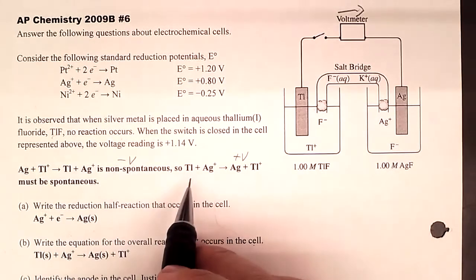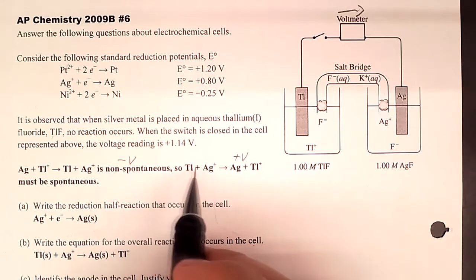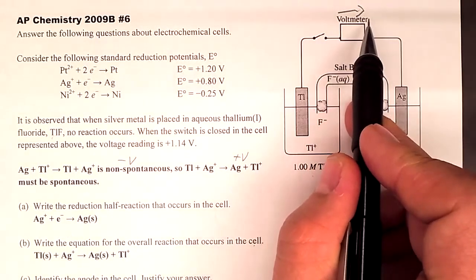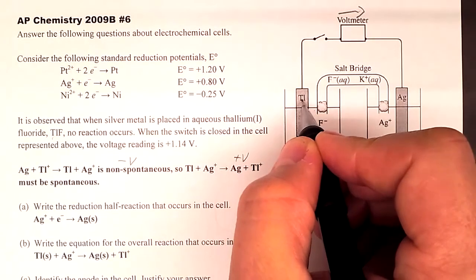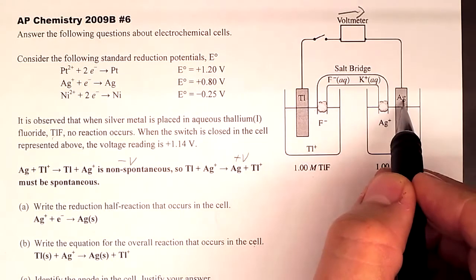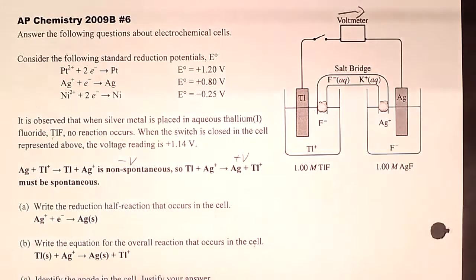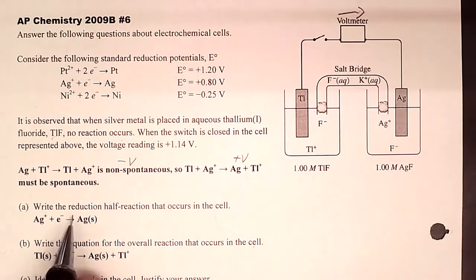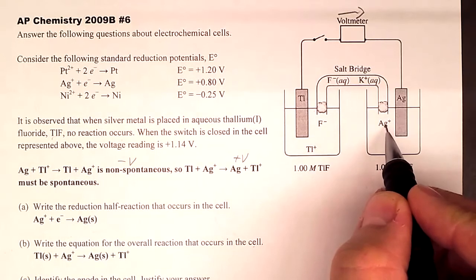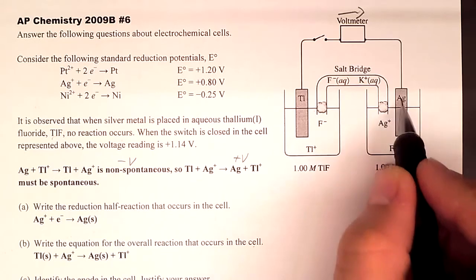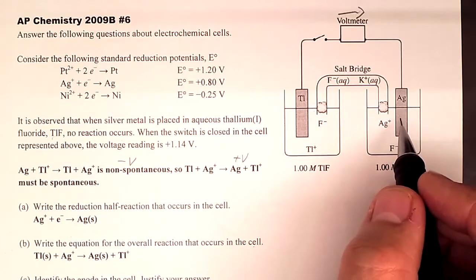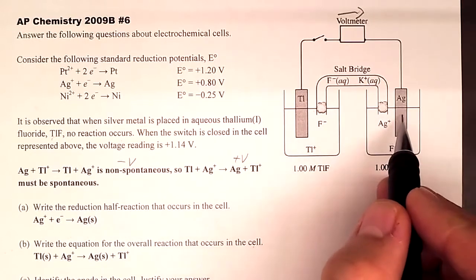In our voltaic cell, electrons flow from solid thallium — left to right when the switch is closed. That means thallium is losing electrons, so it is oxidizing, making it the anode. Silver is receiving electrons, so it is reducing, making it the cathode. The half-reaction at the cathode is reduction: silver⁺ cations are drawn to the negatively charged electrode, pick up an electron, and deposit as solid silver.